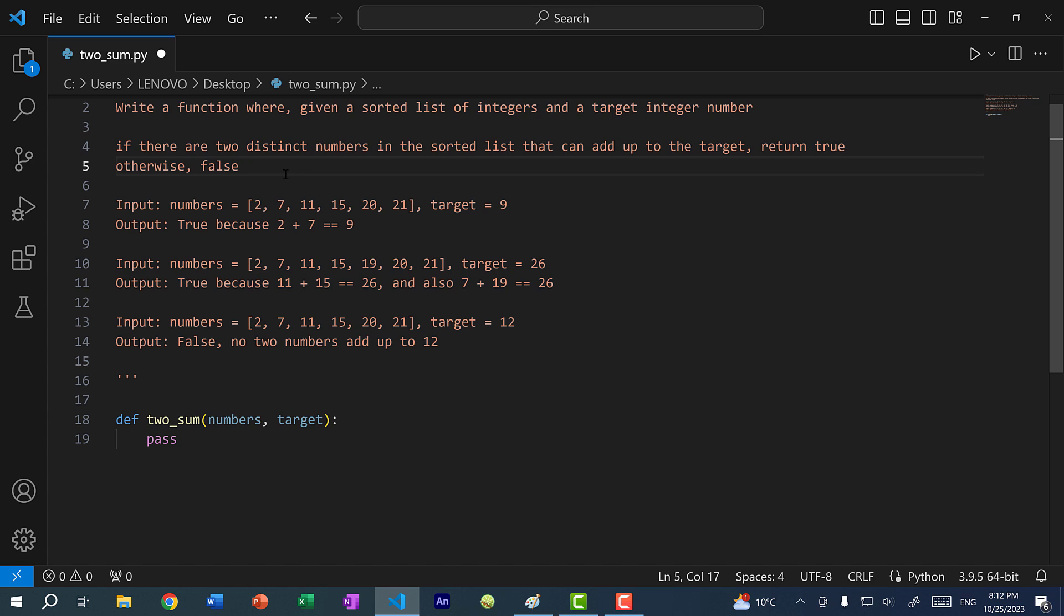So we have some examples here. You see we have this sorted list of integers and the target is 9, and your function should return true for these two inputs because 2 plus 7 is equal to the target 9. Over here we have another example and the target is 26, so this function should return true as well because 11 plus 15 is equal to 26, and 7 plus 19 is also equal to 26.